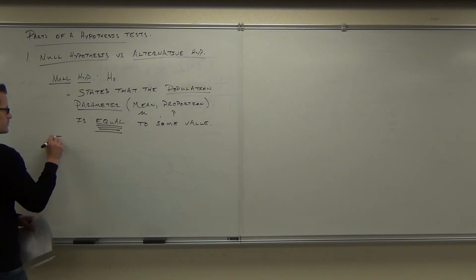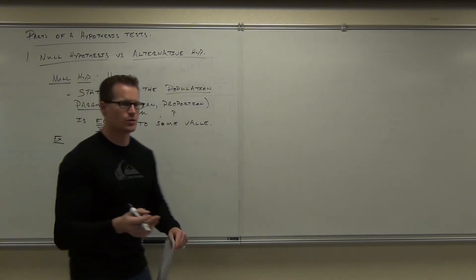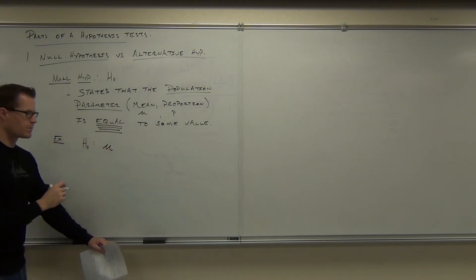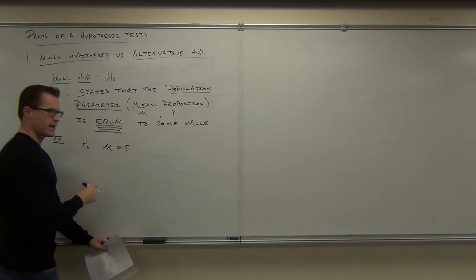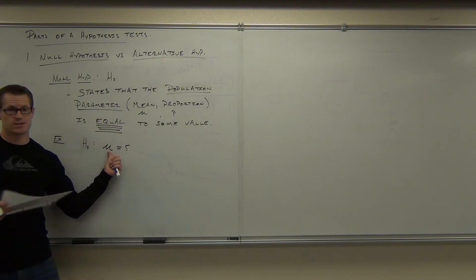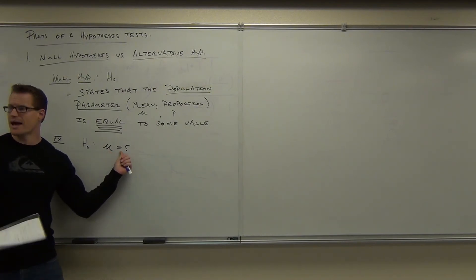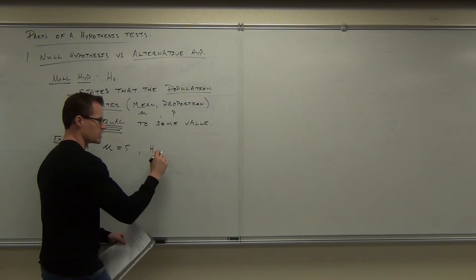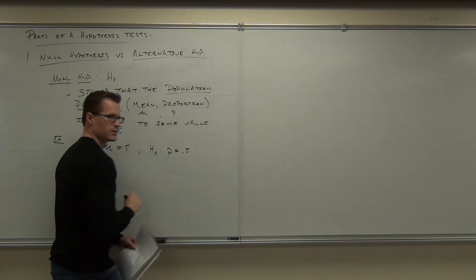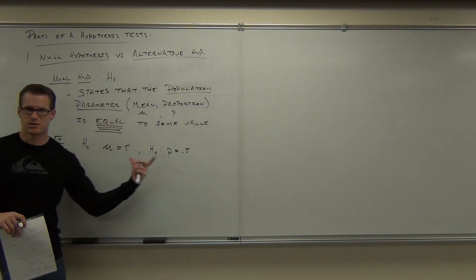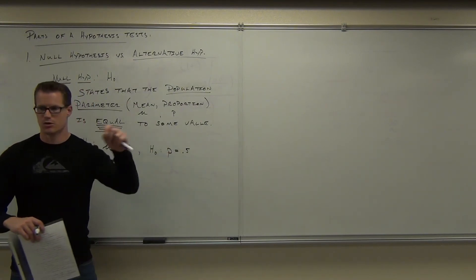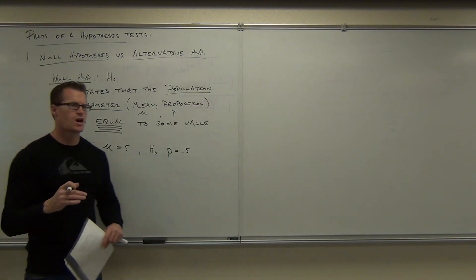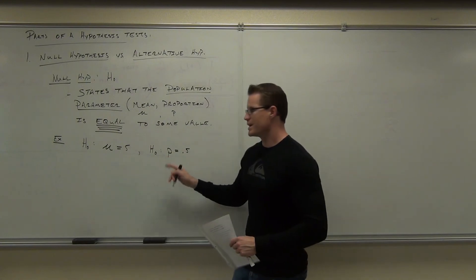Let me give you a simple example of how your null hypothesis will look. You'll write H sub zero with a colon, then the statement. If we're talking about the mean: H₀: mu = 5. That's a null hypothesis — notice it has a population parameter equal to a number. For proportion: H₀: P = 0.5. Remember, proportions must be decimals between zero and one, while means don't have that restriction.